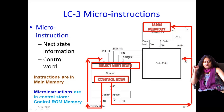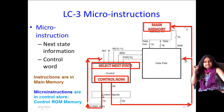There are 49 signals in the control ROM: 39 of these belong to data and 10 of these belong to control.